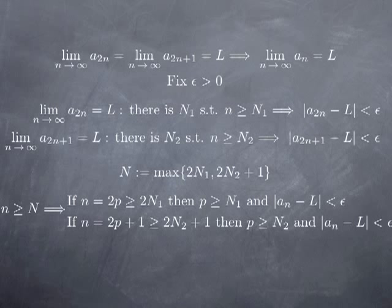Because if n is of the form 2p — if it's even — and n is greater than capital N, it is in particular greater than 2n1, and therefore p is greater or equal to n1, which means that a_{2p} = a_n is within epsilon of the limit L, using what we have for the limit of the sequence a_{2n} of even terms. Now if n is odd — of the form 2p+1 for some p — and it is greater than capital N, it is also greater than 2n2+1, and therefore p is greater or equal to n2. Using what we have for the limit of a_{2n+1}, we find that a_{2p+1} = a_n is within epsilon of L. So either way, the distance between a_n and L is less than epsilon.